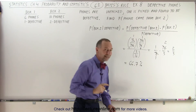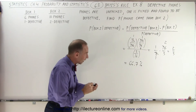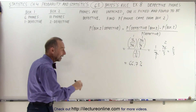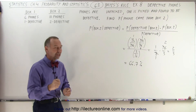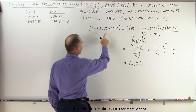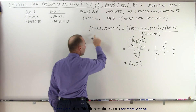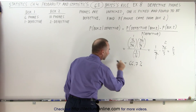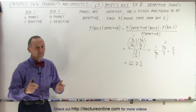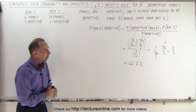So that means if I picked a phone out of that pile of sixteen phones and that phone was defective, the probability that that phone came from box two is sixty-six point seven percent — a two-thirds probability.